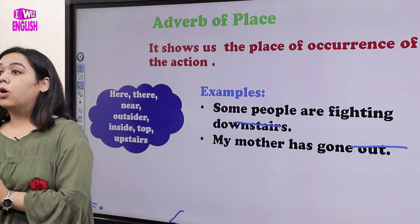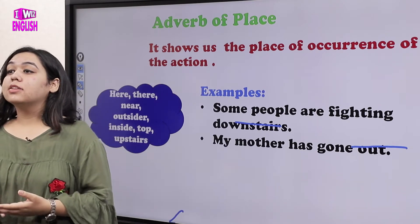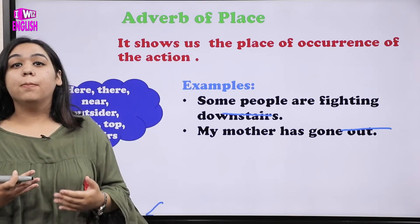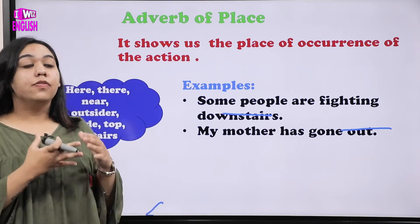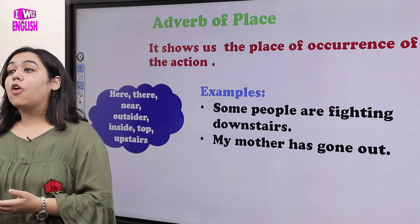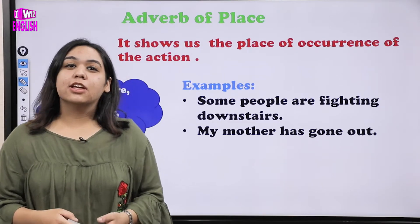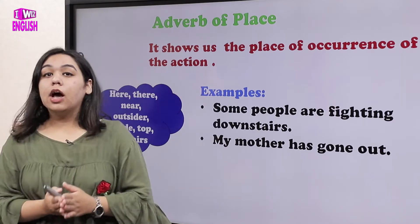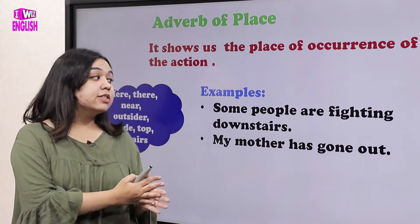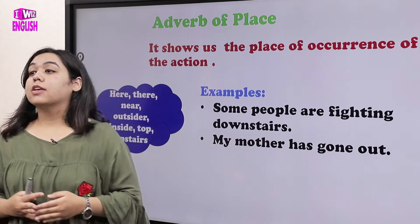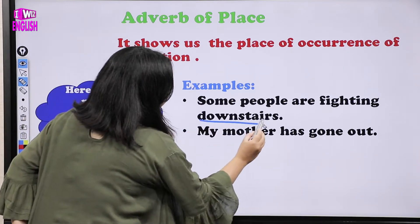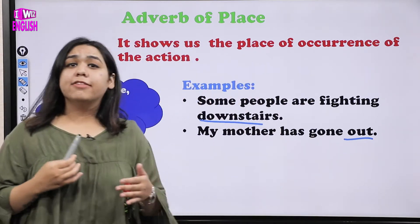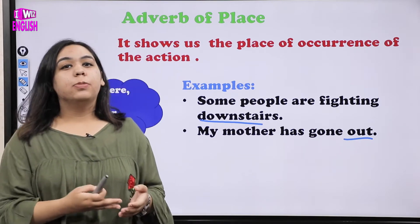Moving on to the next type: adverb of place. Adverb of place shows us where an action is taking place. Examples include: here, there, outside, inside, top, bottom, upstairs, downstairs. For example: 'Some people are fighting downstairs' — downstairs tells us where the fighting is happening. 'My mother has gone out' and 'My father is waiting outside' — here 'out' and 'outside' are adverbs of place.